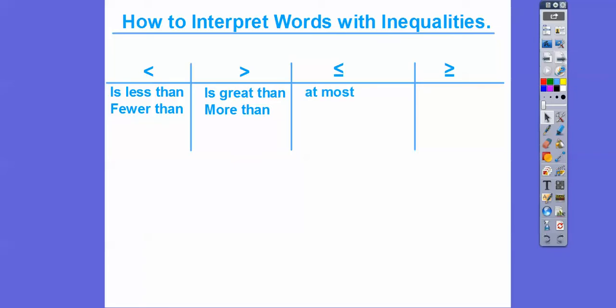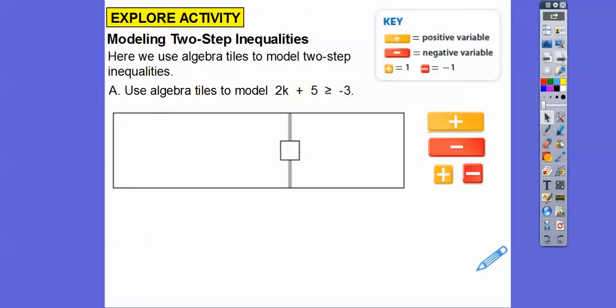These ones here, at most, at most would be less than or equal to. No greater than is less than or equal to or no more than, less than or equal to. So at least would be greater than or equal to. So I'm at least 50, which means I'm 50 years or older. Or no less than. I'm no less than 50 years old.